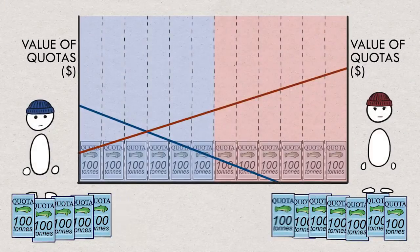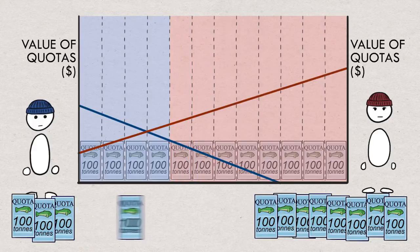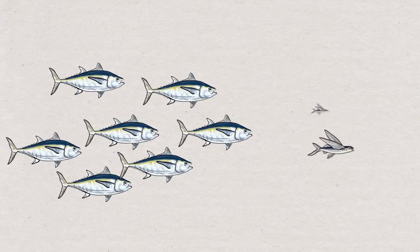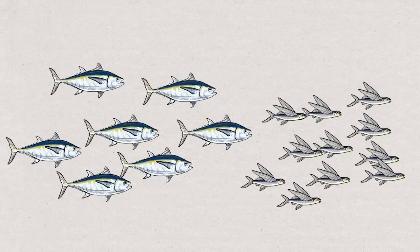In an earlier video we looked at individual transferable quotas and a few of their advantages and disadvantages. One disadvantage being it only looks at one species at a time, which ignores the predator-prey relationships that can exist between multiple commercially exploited species.